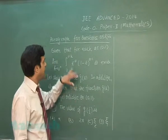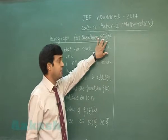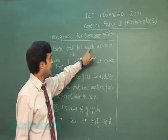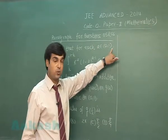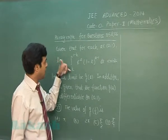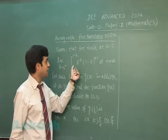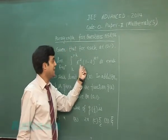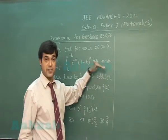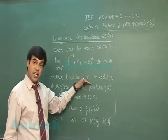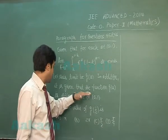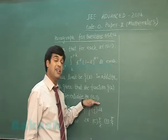Okay, let's go for the next paragraph which is for question number 55 and 56. Given that for each a from the interval (0,1), limit h approaching 0 from positive side integral h to 1-h of t^(-a)(1-t)^(a-1) dt exists. Let this limit be g(a). In addition, it is given that the function g(a) is differentiable on the open interval (0,1).